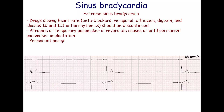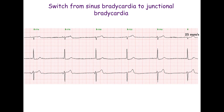Medications that inhibit sinus node function, such as beta blockers, verapamil, digoxin, amiodarone, and class IC antiarrhythmics, should be avoided. This ECG shows a switch from sinus bradycardia to junctional bradycardia. The rate is 34 beats per minute.